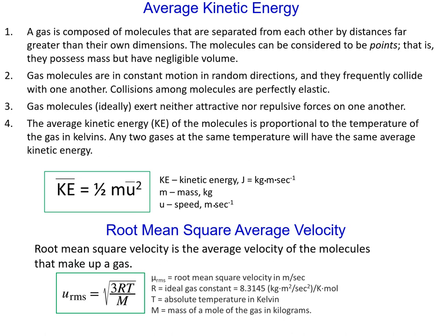Root mean square average velocity is another way of expressing the kinetic energy of gases. Root mean square velocity is the average velocity of the molecules that make up the gas. Both of these may be calculated by the formula shown on this slide.